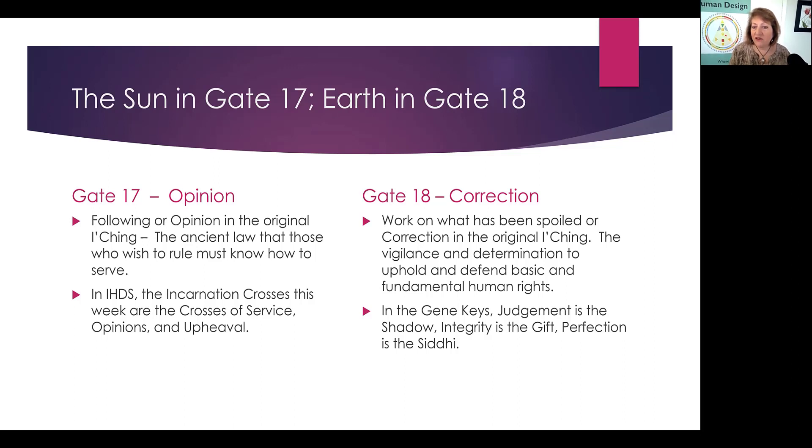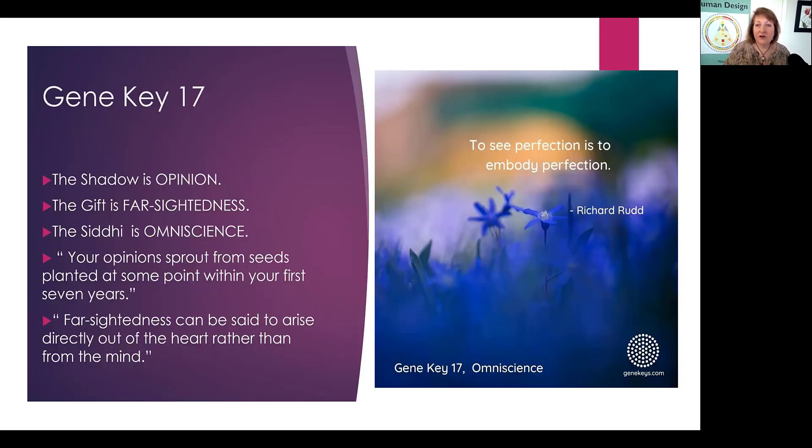In the Gene Keys, judgment is the shadow, integrity is the gift, and perfection is the siddhi. So this Gate 17, or Gene Key 17, is kind of interesting in that the shadow is opinion, the gift is farsightedness, and the siddhi is omniscience. And so in the graphic, Richard says, to see perfection is to embody perfection. And this is what he means by omniscience.